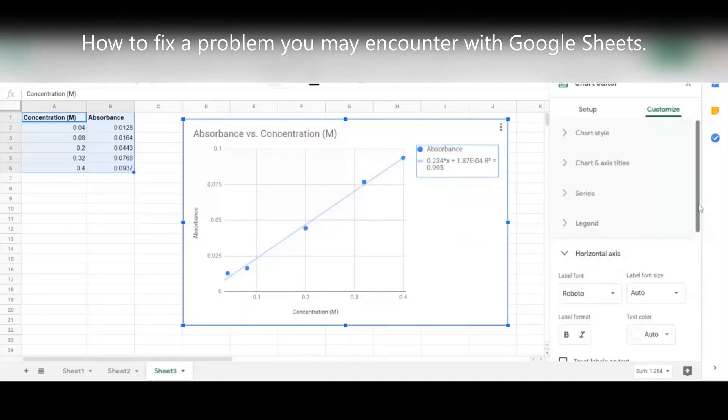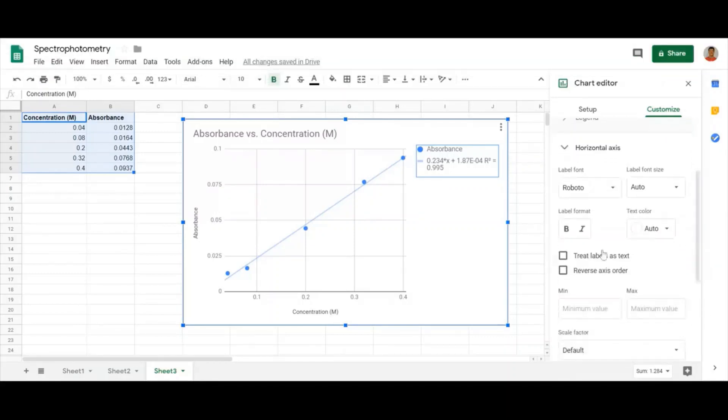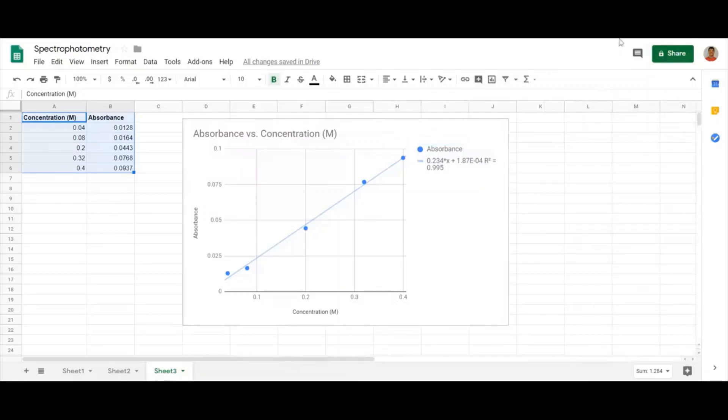If you are using Google Sheets to analyze your data, you may run into an issue with getting the wrong equation for your line. Check the chart editor under customize, horizontal axis, the box called treat labels as text. You can see by checking this on and off, I'm able to change between the correct and the incorrect version of the equations for this line. One way of knowing that your linear regression analysis was incorrect would be to compare your calculated results with the visual comparisons you made earlier in the experiment. If they don't match up, it could be because your linear regression was done using the incorrect version on Google Sheets.